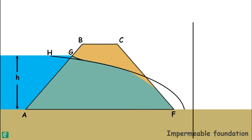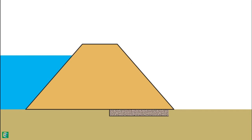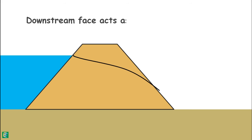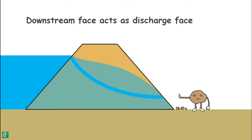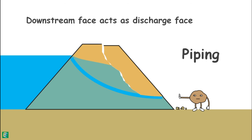For the correction at the downstream, we need to understand a few things. When a horizontal filter is not provided, the seepage line cuts the downstream face of the dam, and the downstream face acts as the discharge face. We usually do not permit this because when seepage water exits from the downstream face it may carry away dam material, which may cause the creation of pipe-like openings. This phenomenon, called piping, may cause failure of the downstream flow or the whole dam.